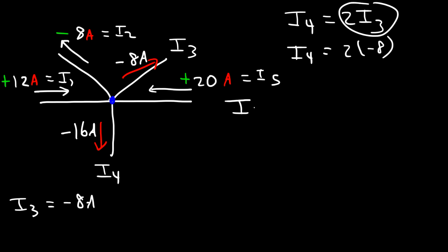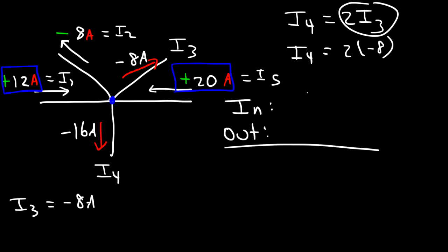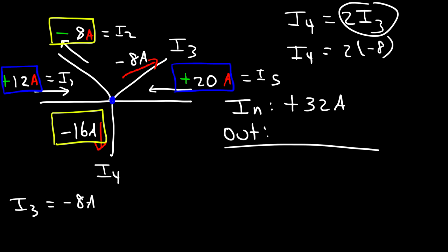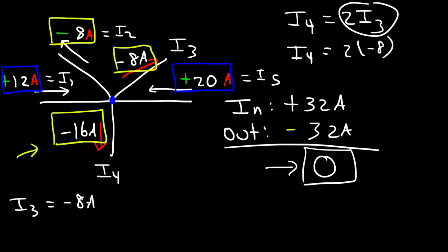Let's verify: the total current flowing in is 12 plus 20, which is positive 32 amps. The currents flowing out are negative 16, negative 8, and negative 8, which sum to negative 32 amps. The net current flowing at the junction is zero, as it should always be. This is a quick way to check your answers. Thank you.